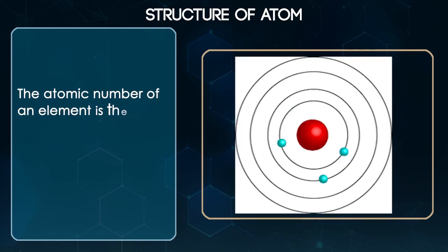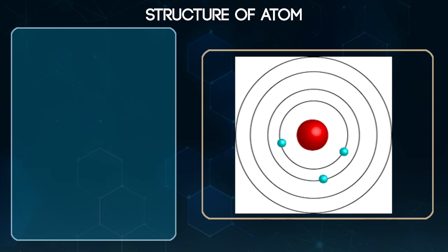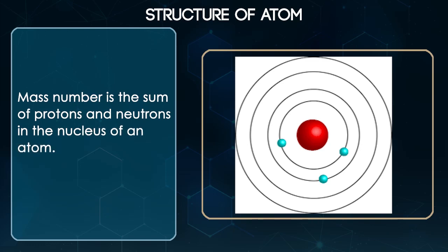The atomic number of an element is the same as the number of protons in the nucleus of its atom. Mass number is the sum of protons and neutrons in the nucleus of an atom.